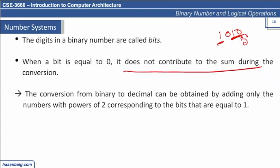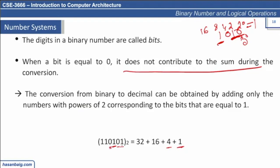So the bit positions correspond to 2 to the power 0 = 1, then 2, 4, 8, 16, 32, and so on. In this example, we add only those positions multiplied by 1. So we add 1, then 2, then 4; then 8 is multiplied by 0 so it is not added; then 16, then 32. When you sum them all together, it gives you the decimal equivalent of this binary number.